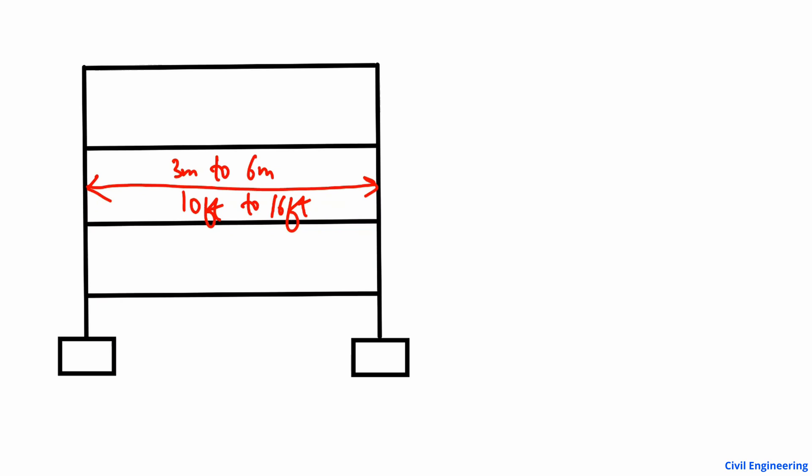We have different columns at different stories of the building, so we will show how the dimensions of the cross-section of the column change with varying height or number of stories. This is the normal size for a residential building, but for a multi-story building with a high number of stories, the distance between columns can change. Normally for a three-story building it is taken from 3 meters to 6 meters.